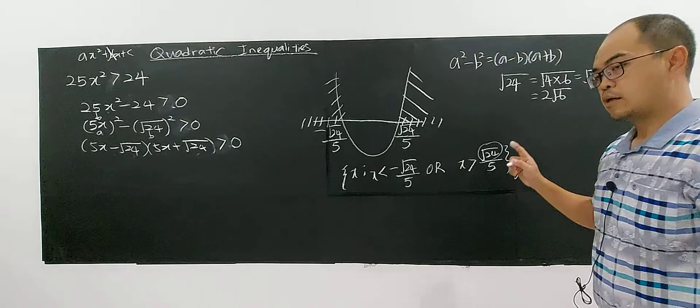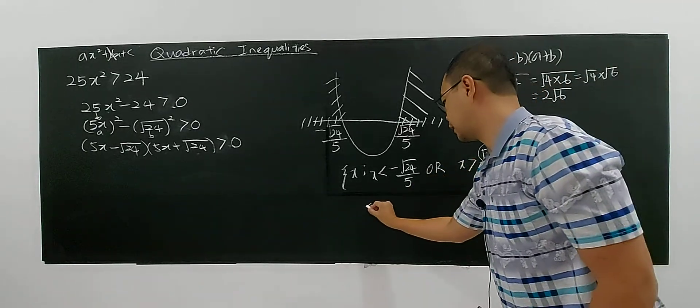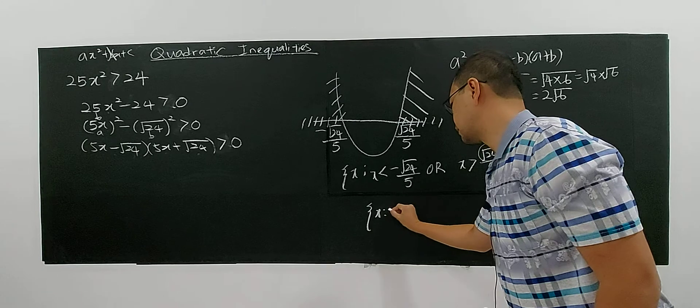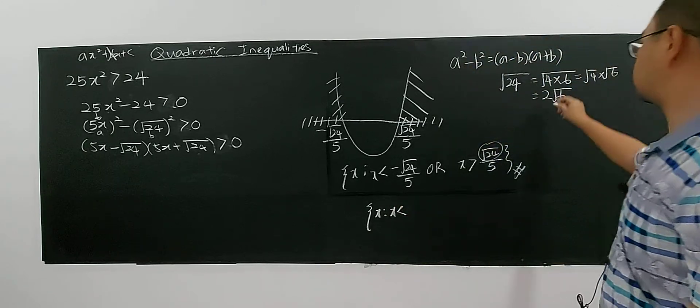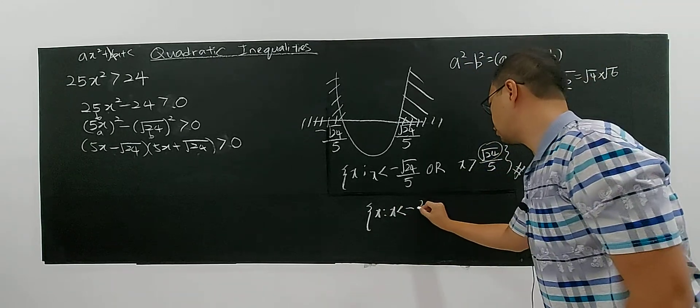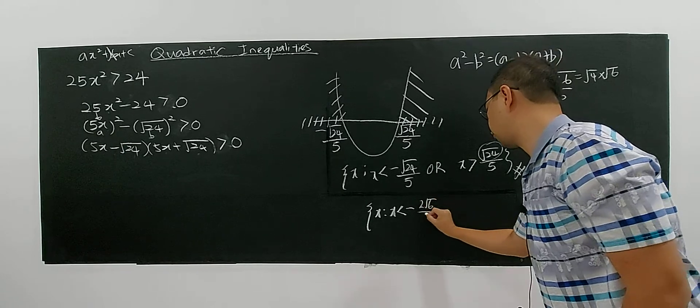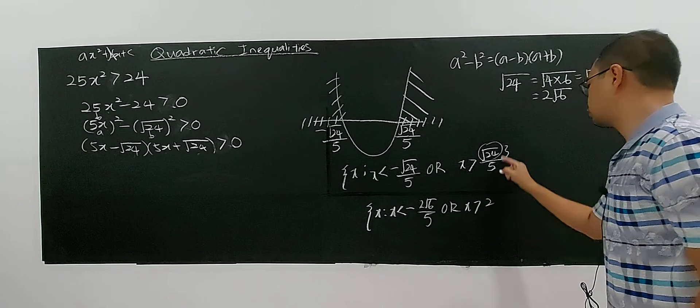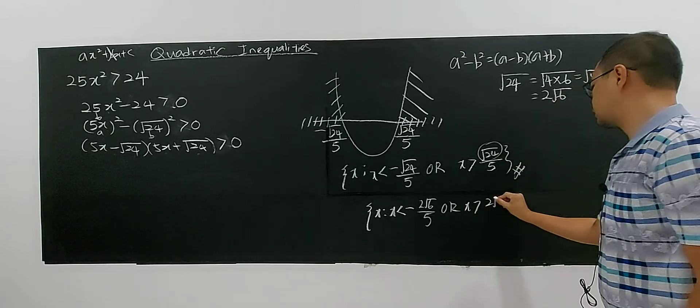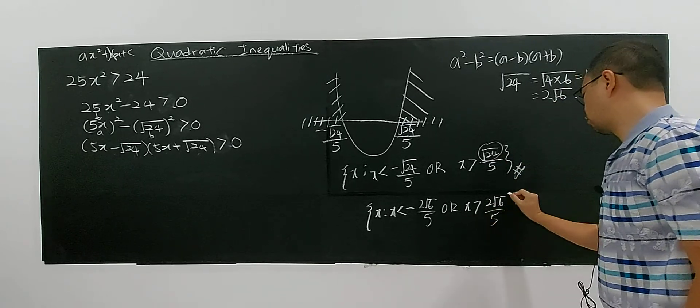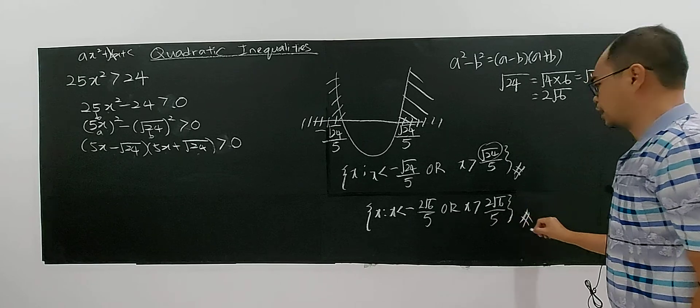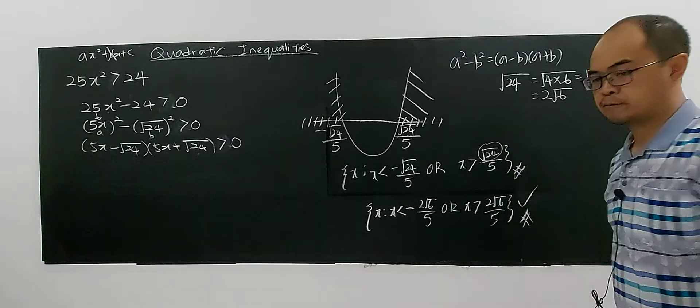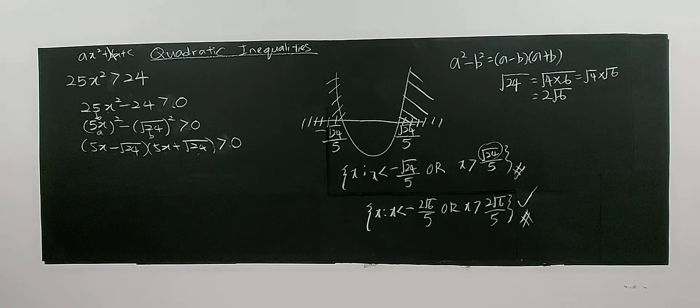So if you want to be perfect, then this will be your solution. It's the same thing, but you simplify. So it becomes negative 2 square root of 6 over 5 or x greater than 2 square root of 6 over 5. Either one is okay, but this is perfect. That's all for this question.